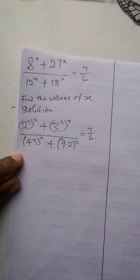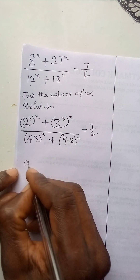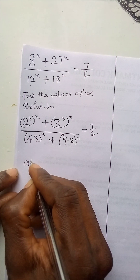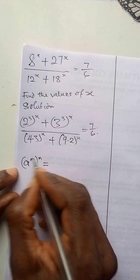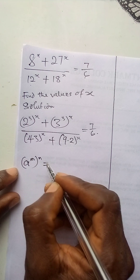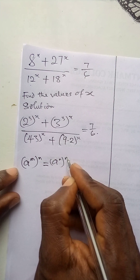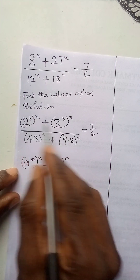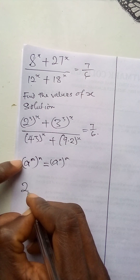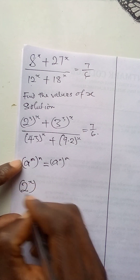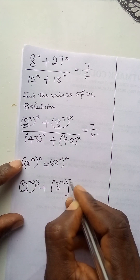Now in indices, we recall that if we have a to the power m raised to the power n, we can interchange the positions of the powers — that becomes a to the power mn. Applying this law, it becomes 2 to the power x, in brackets, to the power 3, plus 3 to the power x, in brackets, to the power 3.